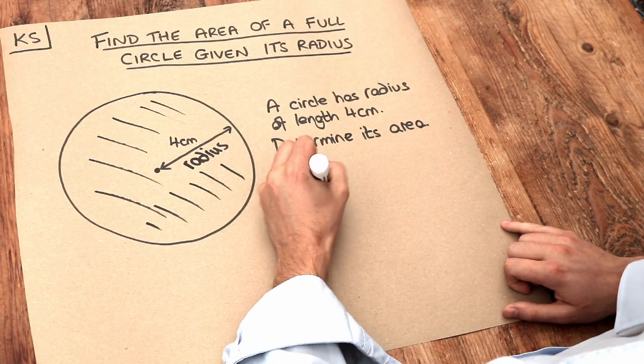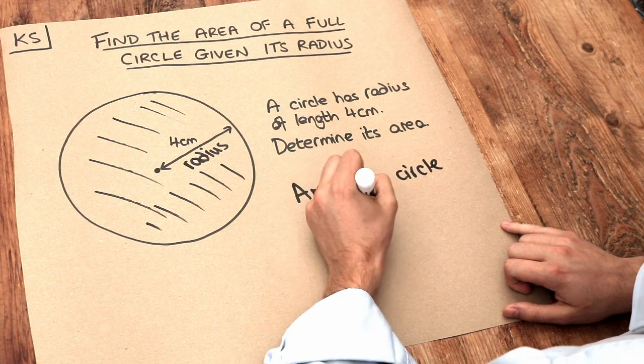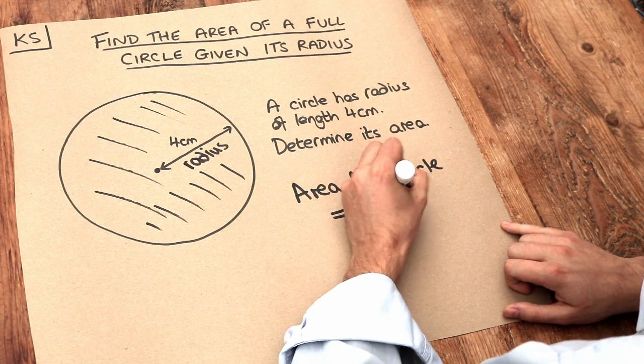Now there's a formula for the area of a circle and it's this: it's equal to pi times the radius squared.